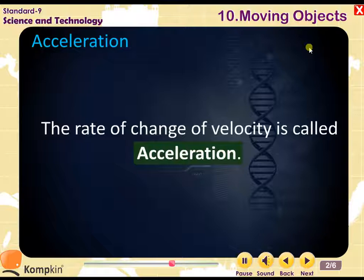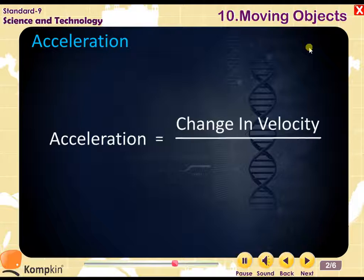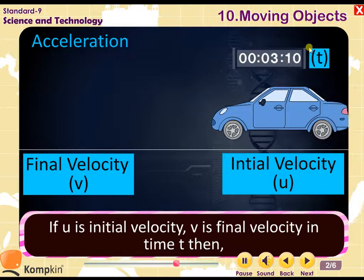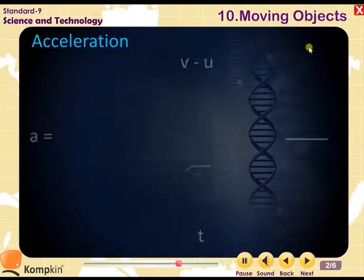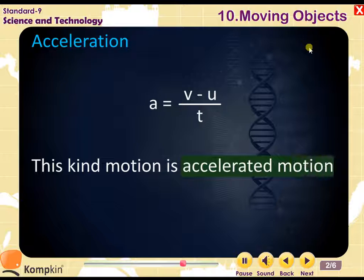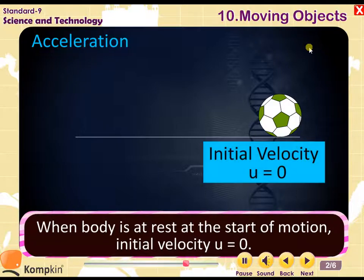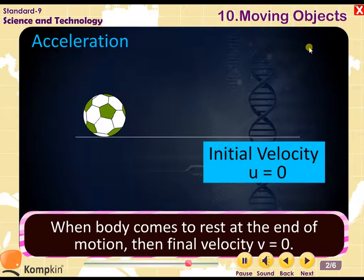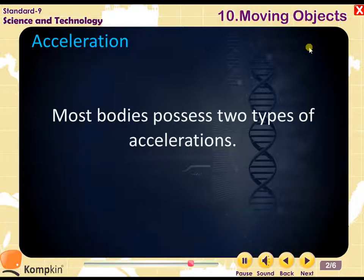Acceleration. The rate of change of velocity is called acceleration. Acceleration is equal to change in velocity upon time. If u is the initial velocity, v is the final velocity in time t, then a is equal to v minus u upon t. This kind of motion is accelerated motion. When body is at rest at the start of motion, initial velocity u is equal to 0. When body comes to rest at the end of motion, then final velocity v is equal to 0.